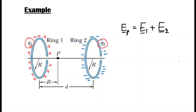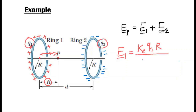The electric field due to the first ring: I use the formula directly. E1 = K_E Q1 · Z / (Z² + A²)^(3/2). Here Z is the distance from the point to the center of ring 1, which equals R, and the radius A also equals R. So the denominator becomes (R² + R²)^(3/2). The direction is to the right — away from the positive charge, in the +i direction.